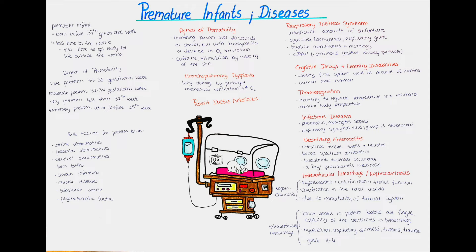Other examples of complications can be cognitive delays and learning disabilities. This might be hard to pinpoint early on, since language skills and motor development happen gradually for babies — usually a baby speaks its first word at around 12 months. Autism might also be a little more common in preterm individuals. However, most infants born preterm will have no intellectual or cognitive difficulties later in life.